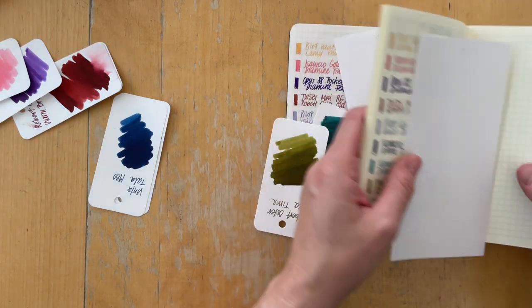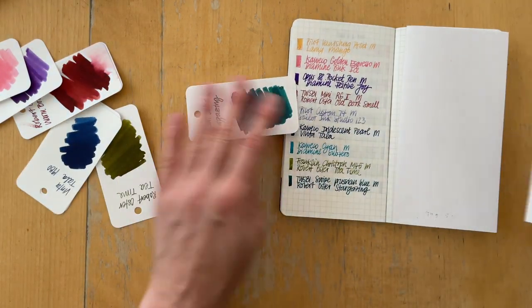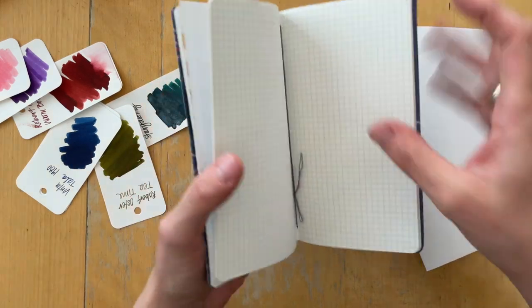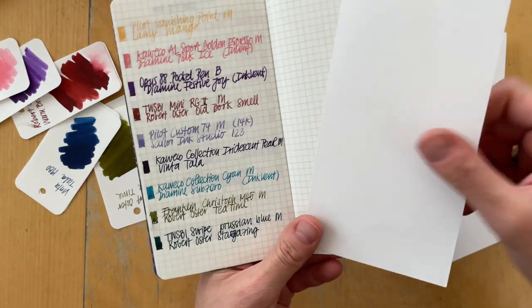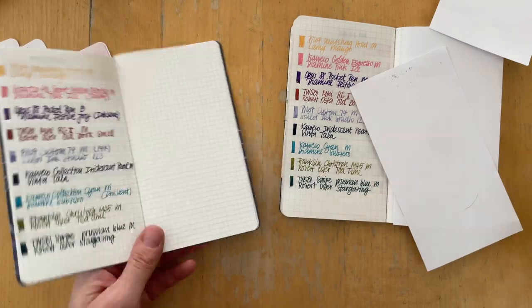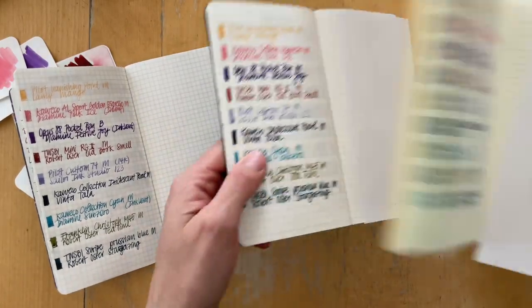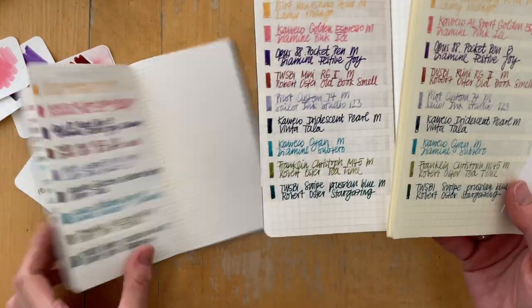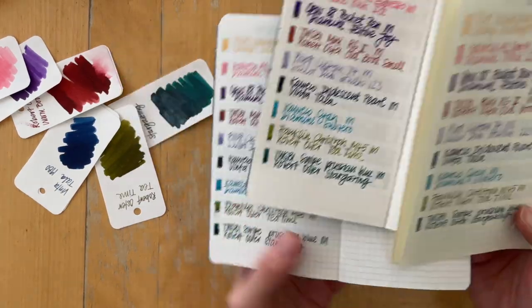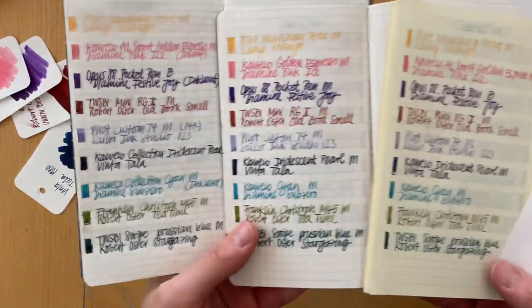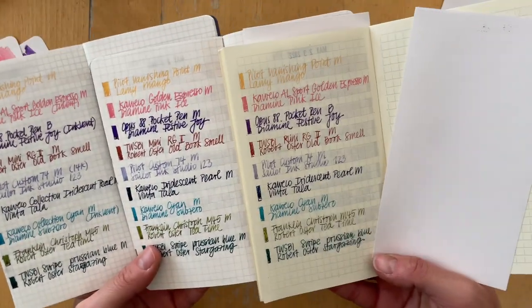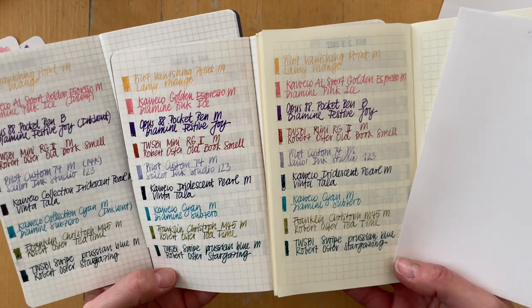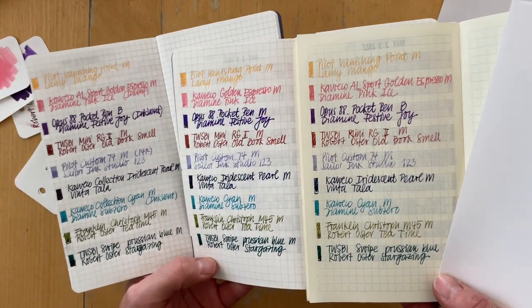Let us compare how these inks look on the different papers. I put on clips while I was filming and talking for the Tomoe river paper. You must've seen me writing in the other journals in different clips and from different writing angles.